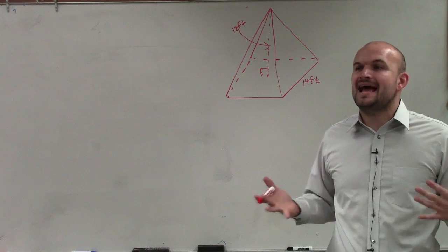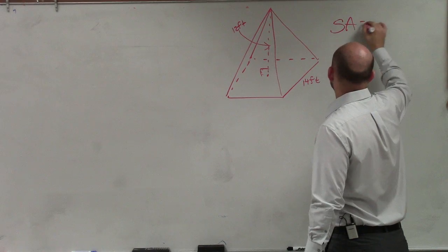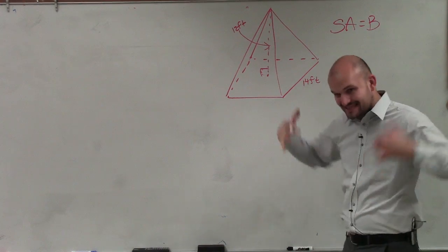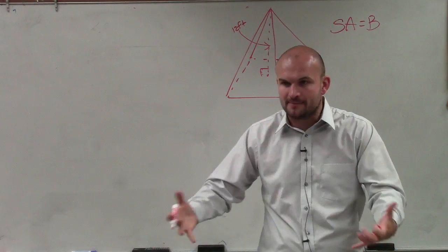It's going to be the exact same type of general formula, but it's going to be a little bit different. So the surface area equals B, which is the area of the base, which in this case you guys can see is a square.